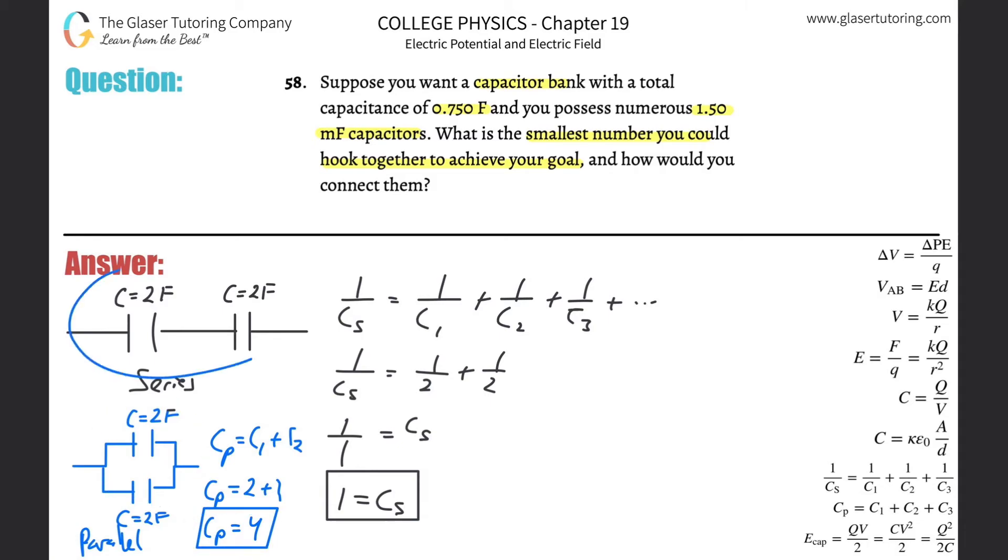For a parallel arrangement, the total is going to be larger. For a series arrangement, the total is less than the value of any individual capacitor. Just think about how the question could have changed.